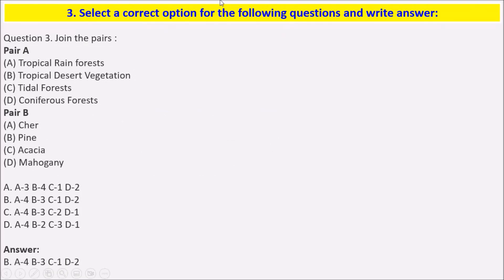Third question: join the pairs. Tropical rainforest — Mahogany. Tropical desert vegetation — Acacia. Tidal forest — Chair. Coniferous forest — Pine.